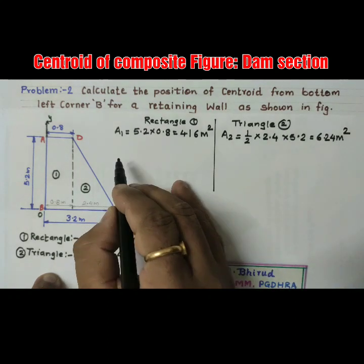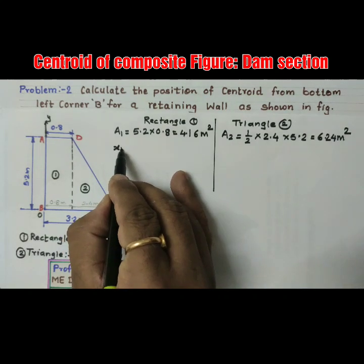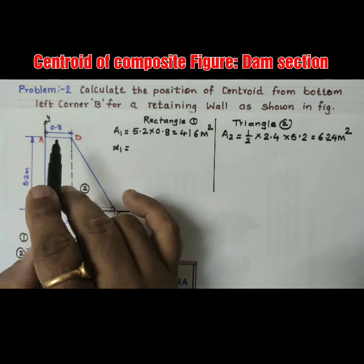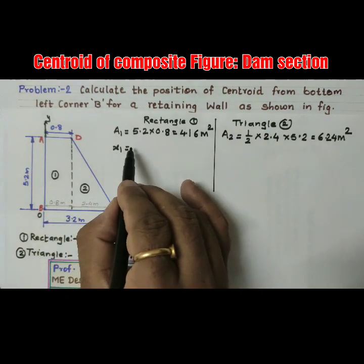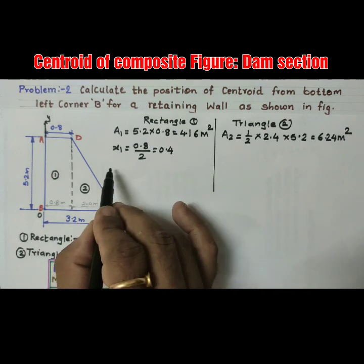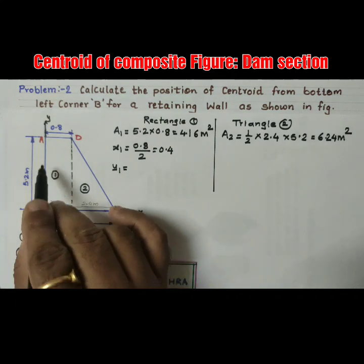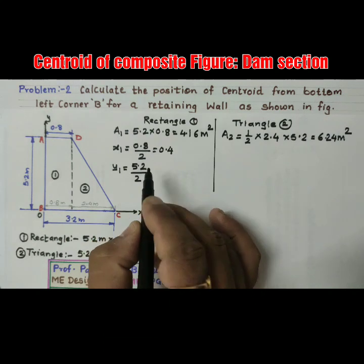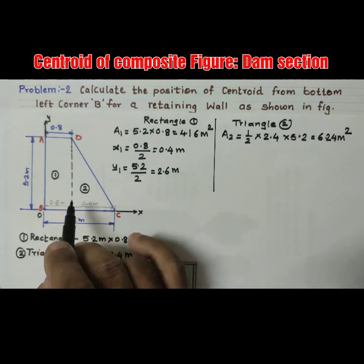Now calculate X1, X2, Y1, and Y2. For the first figure, X1 is the horizontal distance of the centroid of the rectangle from the Y-axis. That is 0.8 ÷ 2 = 0.4 m. For Y1, the vertical distance of the centroid of the rectangle from the X-axis is 5.2 ÷ 2 = 2.6 m.